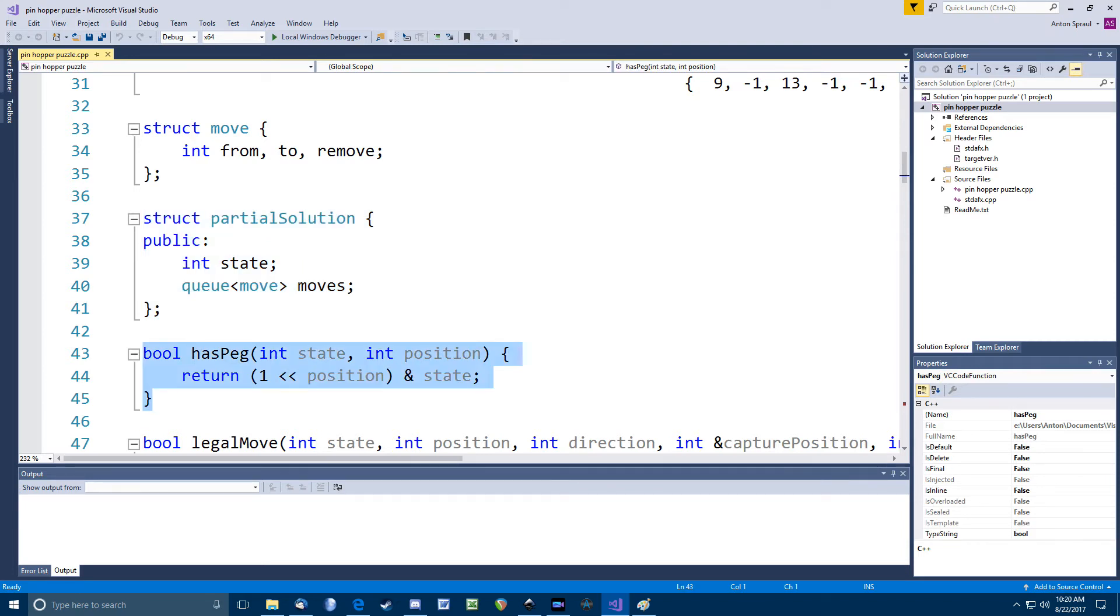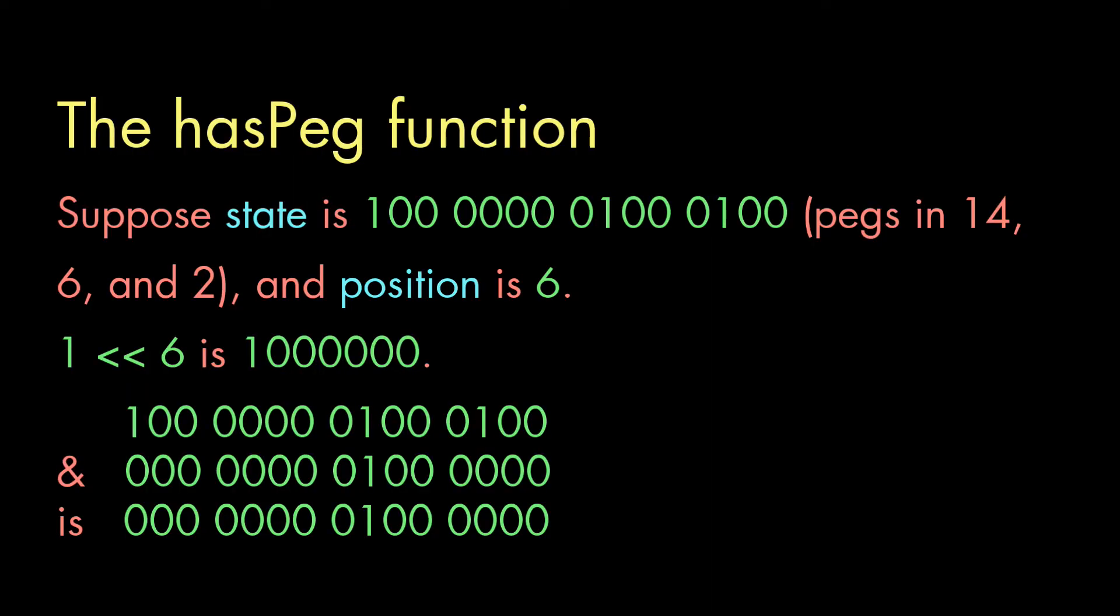Next, the hasPeg function is going to tell me whether a particular board state has a peg in a particular position. I do this using the C++ binary shift operator. I take a 1 and shift it left by the position number, then binary AND it to see if the result is positive. For example, suppose that this was our binary number and the position we're checking is 6. So, 1 left shifted 6 times is this, and when we AND this with the state, we get this result. And because that's non-zero, there is a peg in position 6.